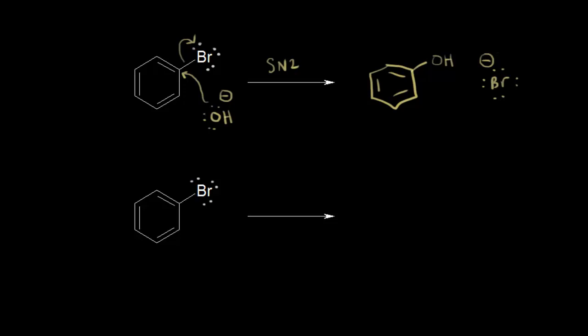The problem is that when our nucleophile is attacking this carbon, it is an sp2 hybridized carbon that is part of the benzene ring. The benzene ring is going to get in the way of the nucleophile attack via an SN2 type mechanism. Because you're working with an sp2 hybridized carbon, the nucleophile can't attack in the proper orientation. So SN2 does not occur at an sp2 hybridized carbon, and this reaction doesn't proceed this way.